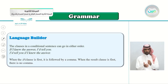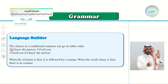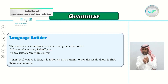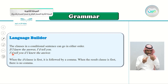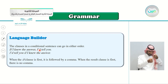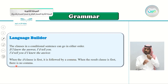Language builder: the clauses in a conditional sentence can go in either order. 'If I know the answer, I tell you' — or — 'I tell you if I know the answer.' Remember: if you begin with the if clause, put a comma after it, then continue with the main clause. If you begin with the result clause, there is no comma.